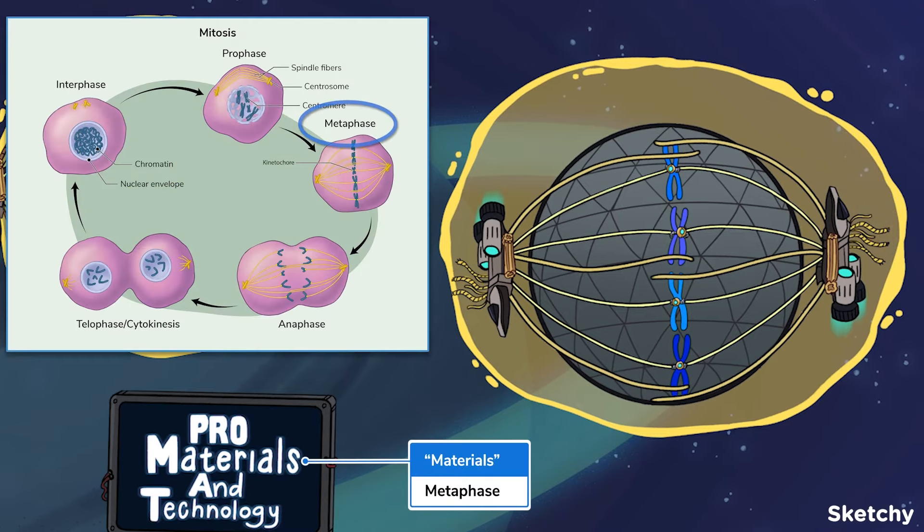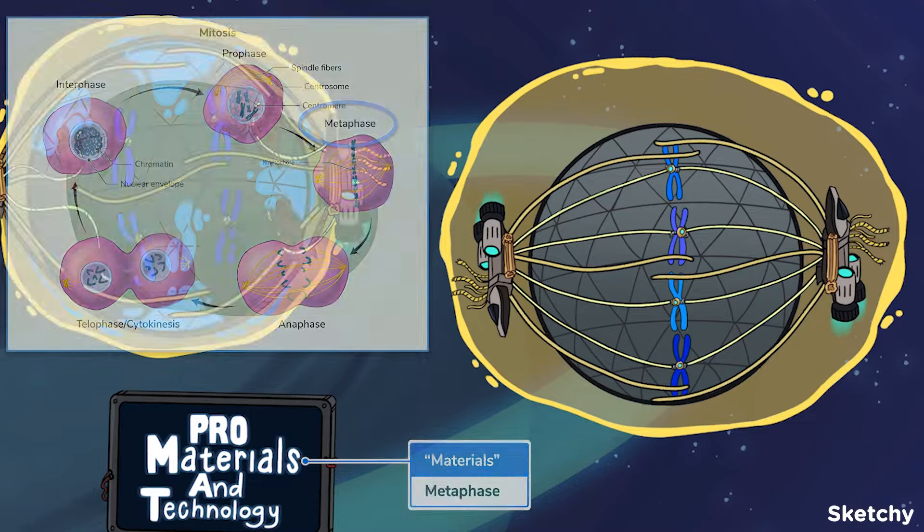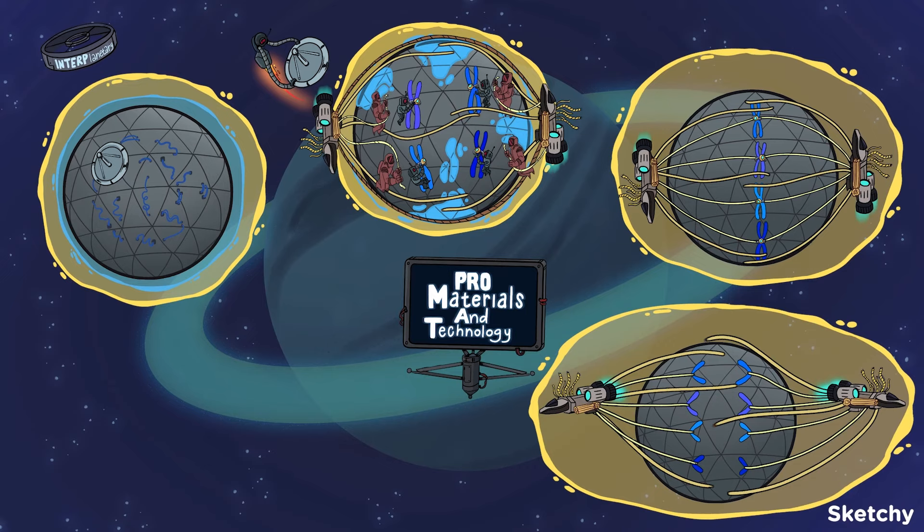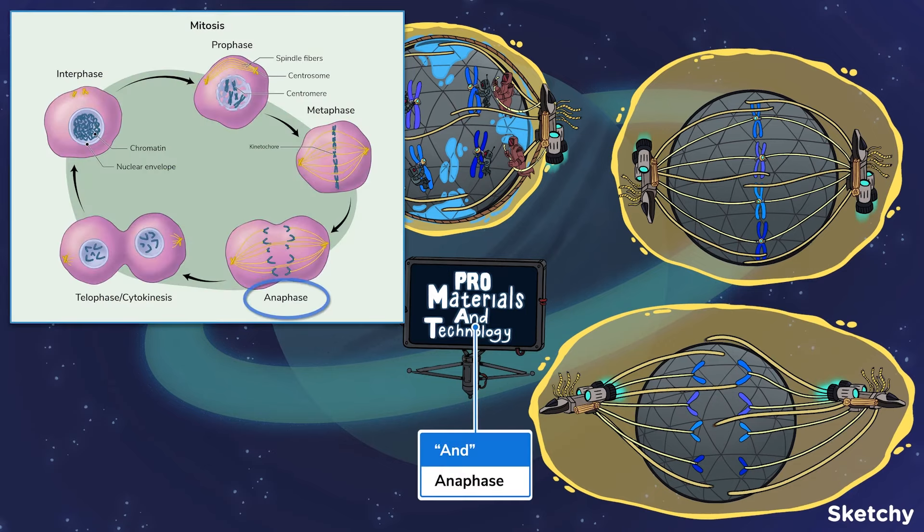metaphase. The sister chromatids are now in their fully condensed form and line up at the metaphase plate. Once they're given the AOK, the sister chromatids are pulled apart to opposite poles during anaphase.